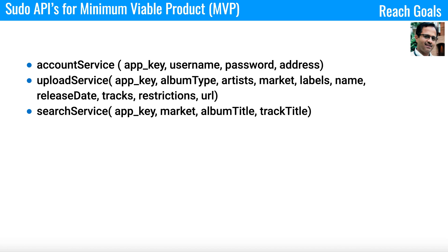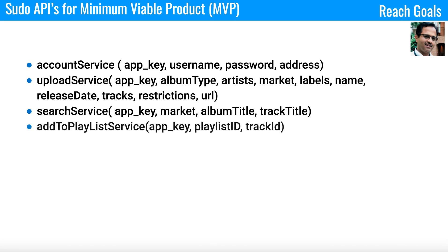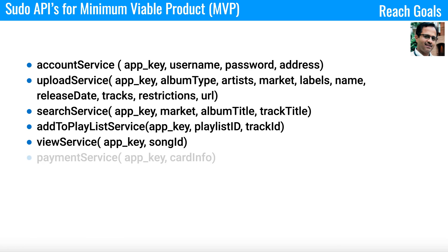We will have a search service API — you enter a track name or album title in the UI, it searches the backend and returns results. We will also have an add-to-playlist API with fields: app key, playlist ID, and track ID. There is also a view service, primarily used to play audio or video, which requires an app key and song ID.